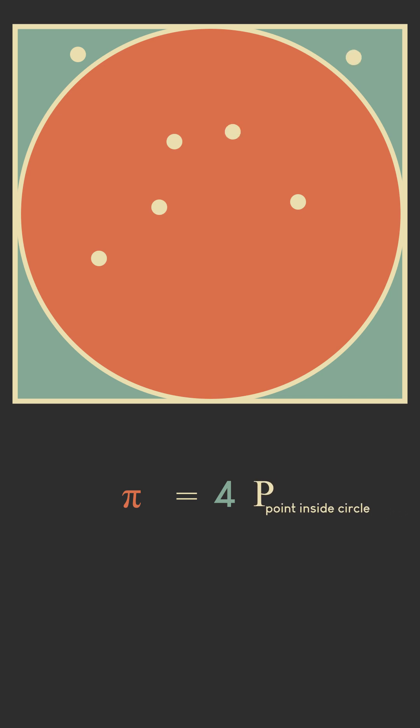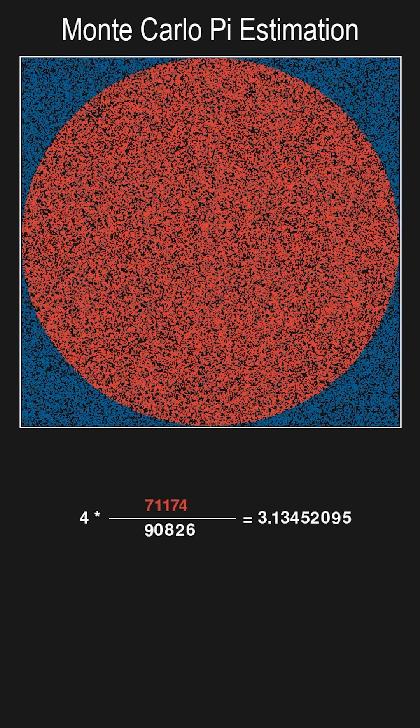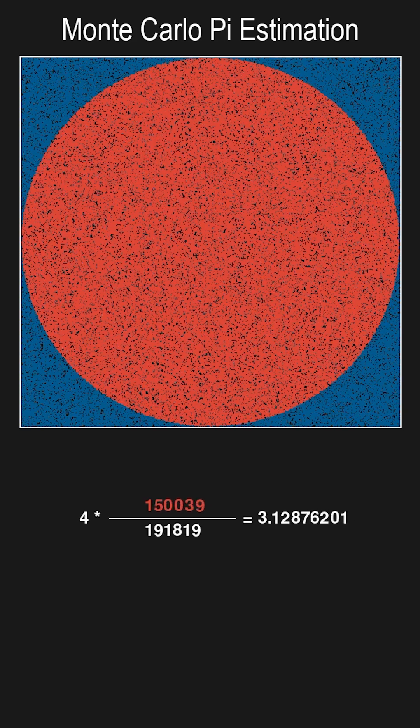We can estimate that probability by throwing lots of random points inside the square and seeing how many of these points are inside the circle. Let's draw 200,000 points with a python script. Very easy. We can see.